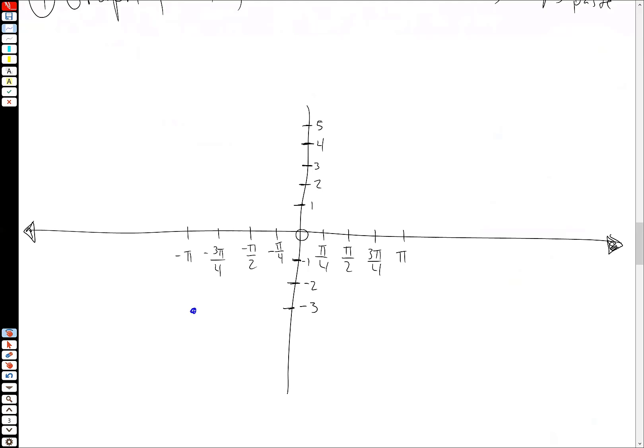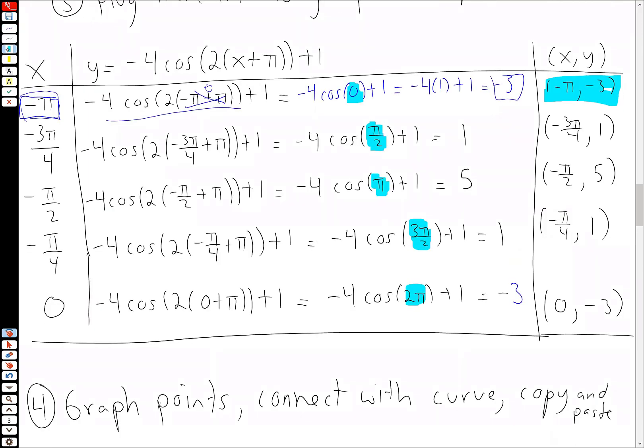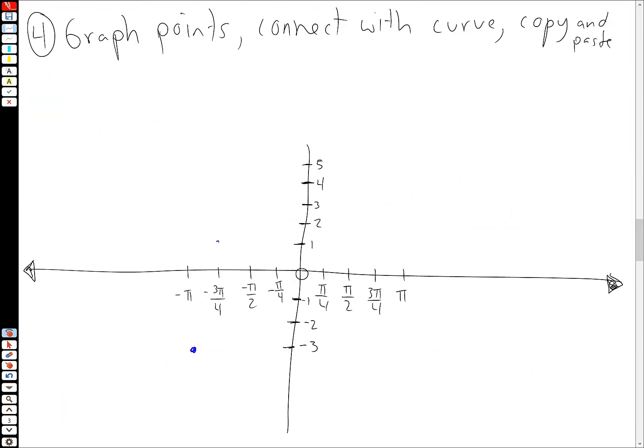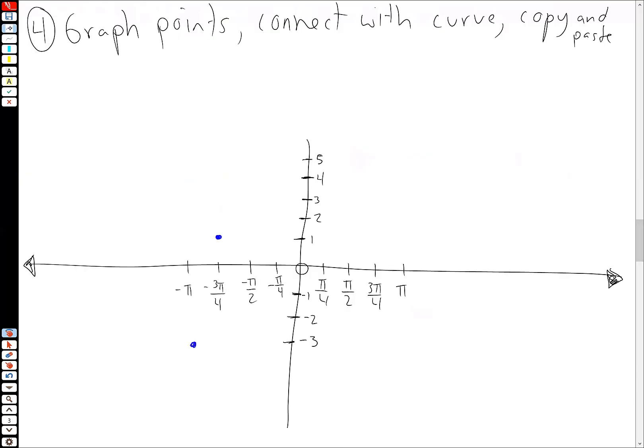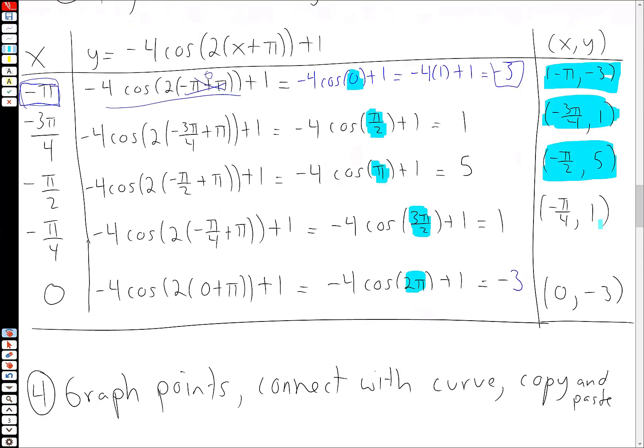And then we have minus 3π over 4, 1. Minus 3π over 4, 1 is right here. Minus π over 2, 5. Then we'll have minus π over 4 back down to 1 and then 0, minus 3. And just to show you guys those points again. Minus π over 4, 1, 0, and 3.